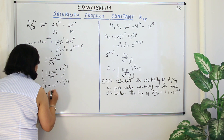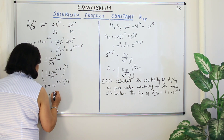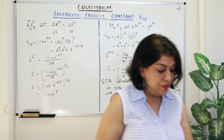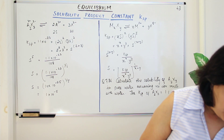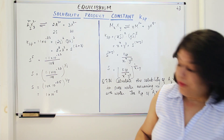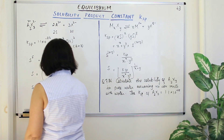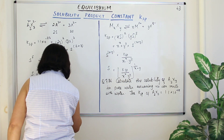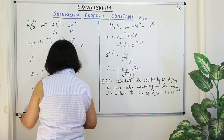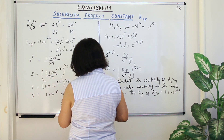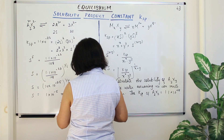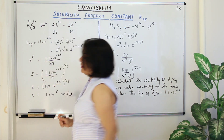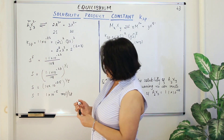So S = 1 × 10⁻⁵ moles per litre. That is how you calculate the value of S for A₂X₃.